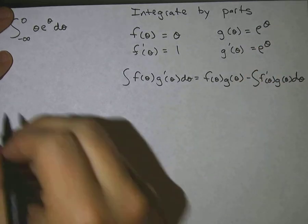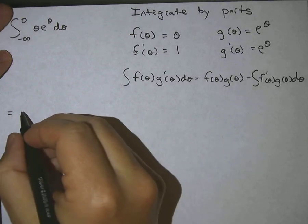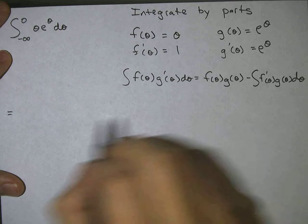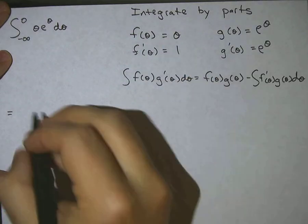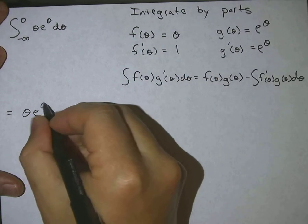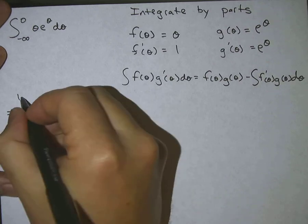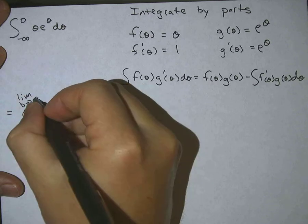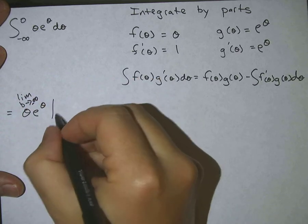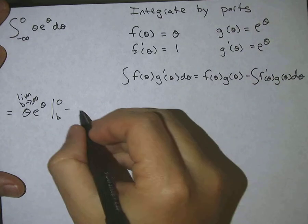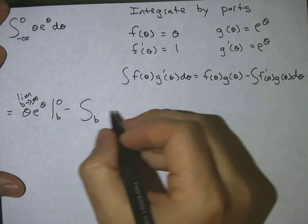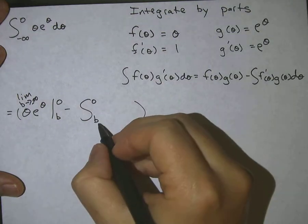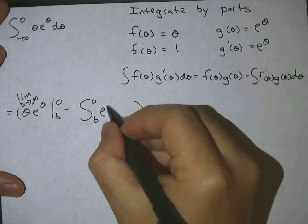Using the integration by parts formula, I need to write the limit as b approaches negative infinity and evaluate from b to zero. So this becomes fg, which is theta e to the theta, minus the integral — we include this whole thing in that limit — from b to zero of e to the theta d theta.